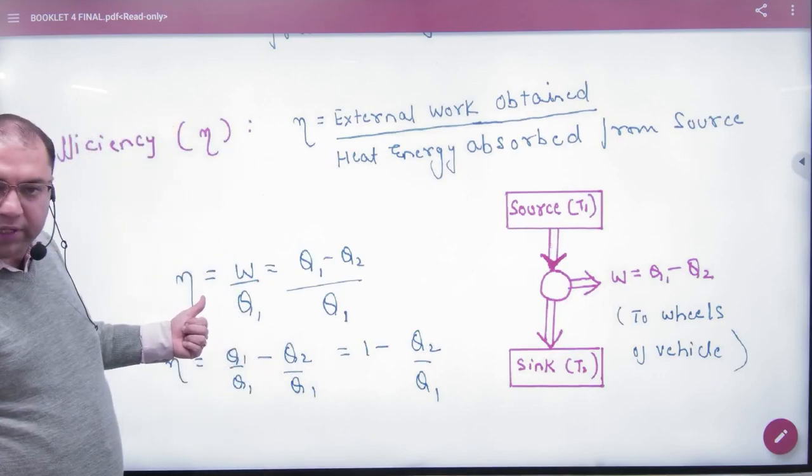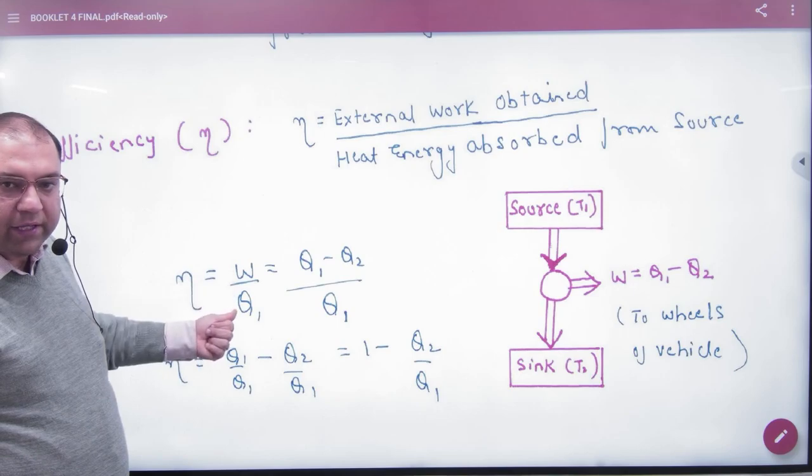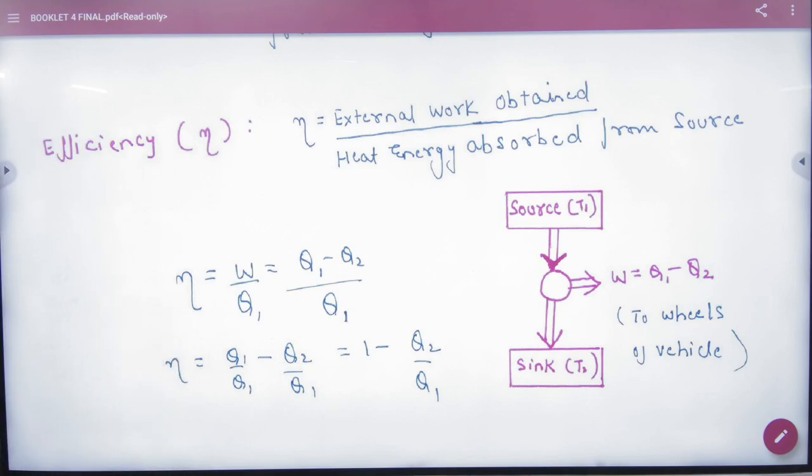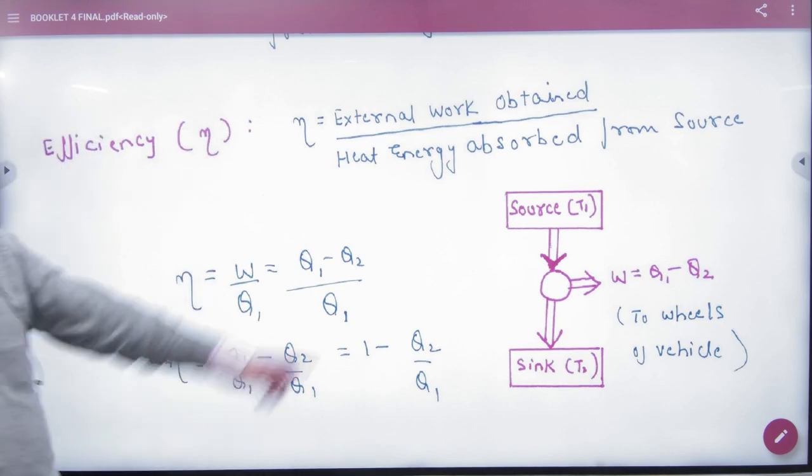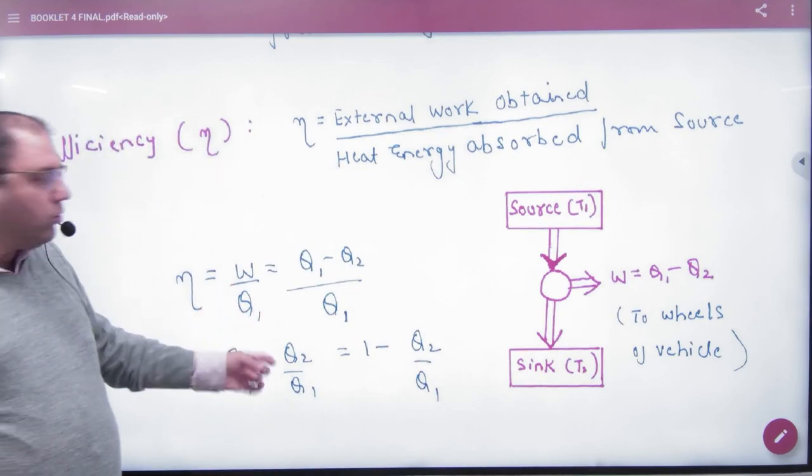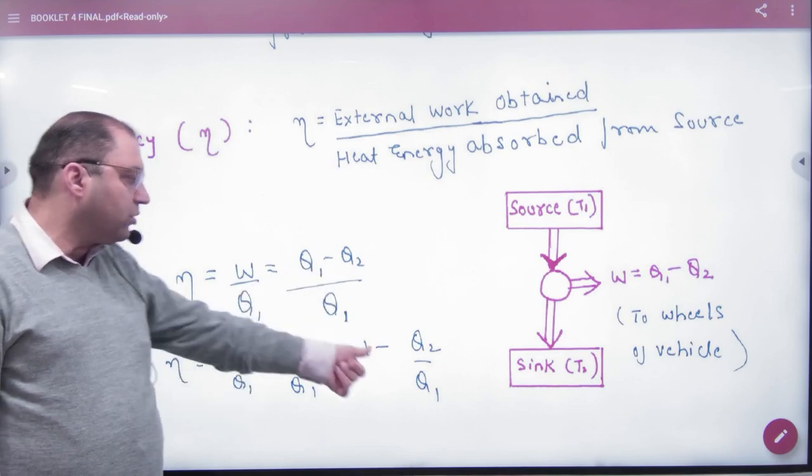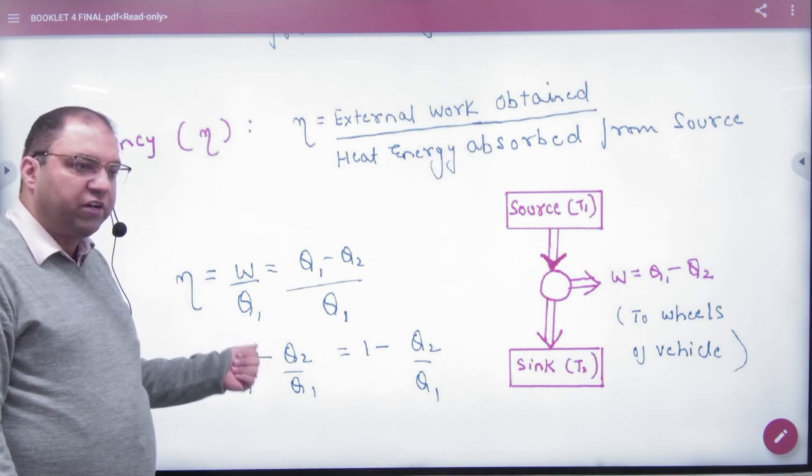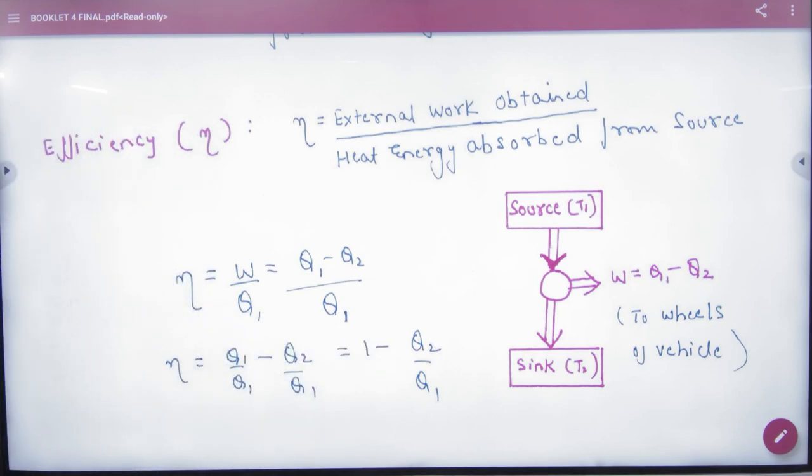How much input, Q1? So efficiency, note in our formula booklet, W divided by Q1. And W value is Q1 minus Q2. So first formula is W divided by Q1, W inside is Q1 minus Q2, Q1 minus Q1 over Q1. Then second formula, note this: 1 minus Q2 by Q1. Efficiency first formula W divided by Q1, second formula is 1 minus Q2 by Q1.